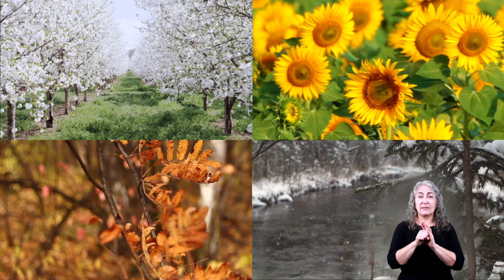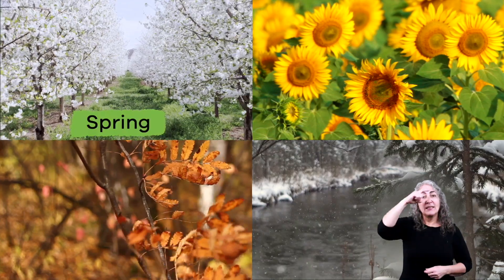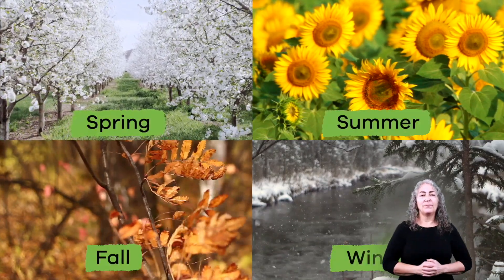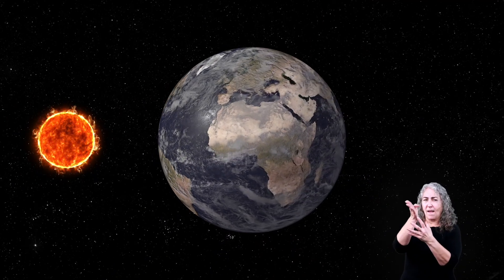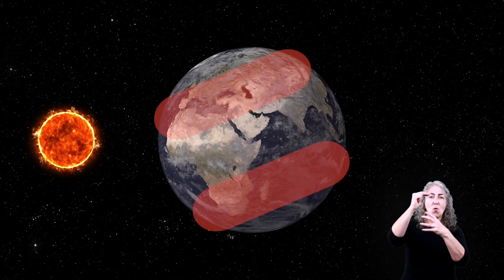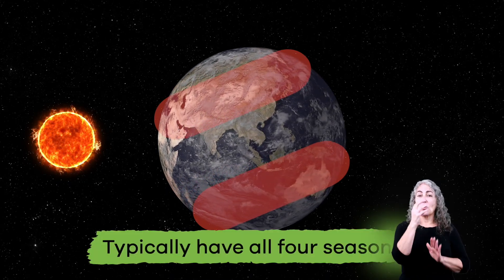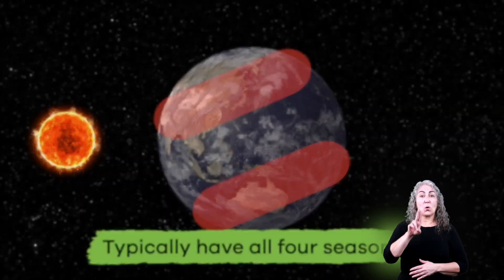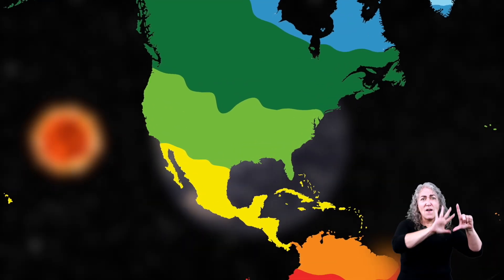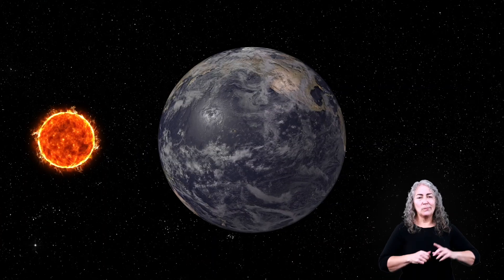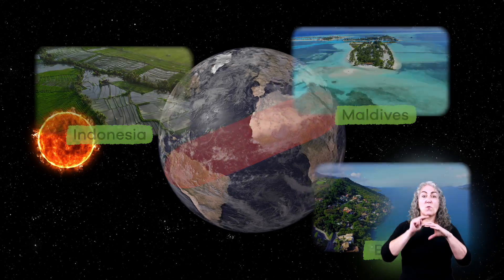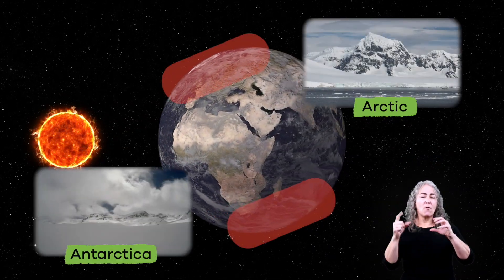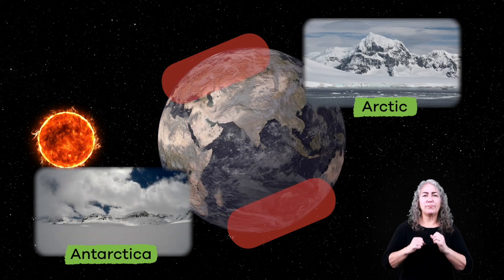There are four seasons: spring, summer, fall, and winter. The parts of our planet located halfway between the North and South Poles typically have all four seasons, like a lot of areas in the United States. But this is not true everywhere. In places near the equator, it feels like summer all year round. And in places near the North Pole or the South Pole, it always feels like winter.